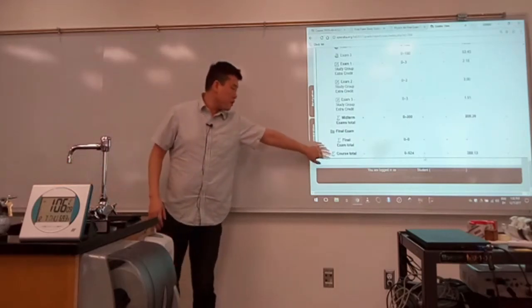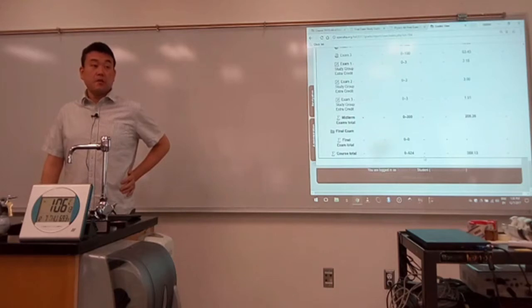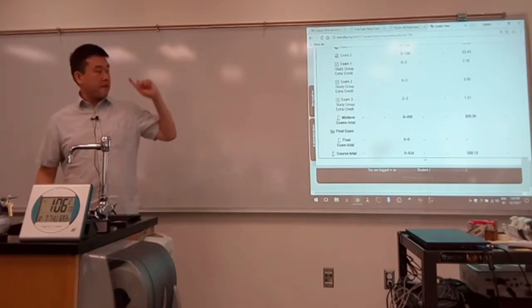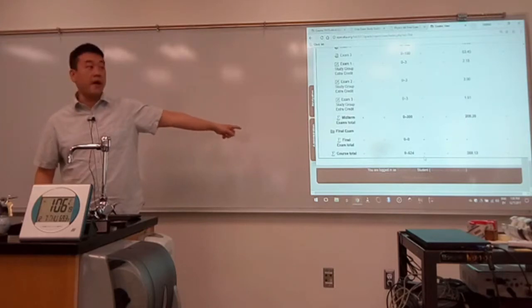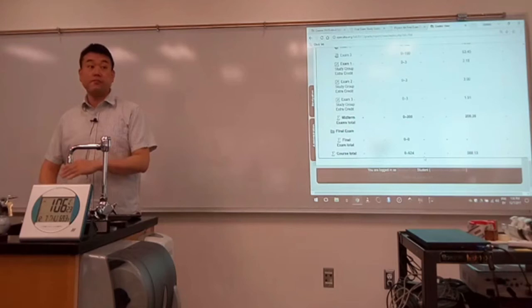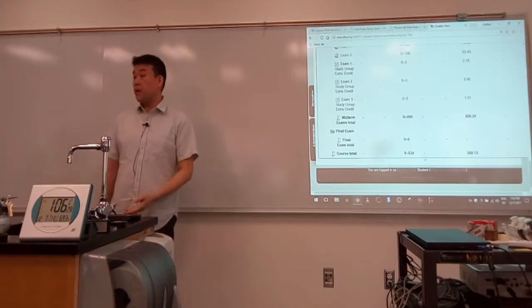When you look at the course total, you should get an overall percentage and letter grade A, B, C, D. I have it programmed correctly so that what it claims is A is according to my grade breakdown, 85% and above. What it claims is B is 70% and above and so on.